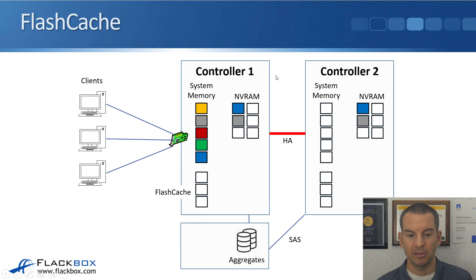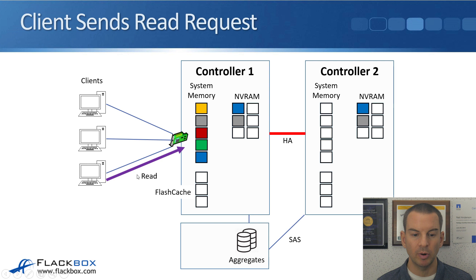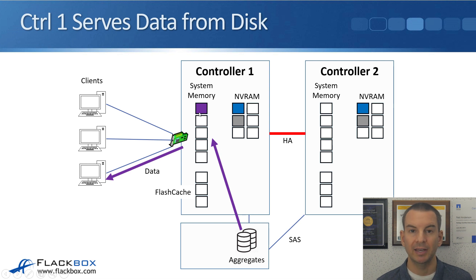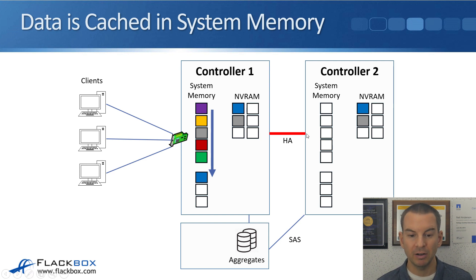FlashCache extends the size of your system memory, and FlashCache sits below the level of system memory. In the example, we've got yellow data at the top of the cache and blue data at the bottom. When a client sends in a read request for purple data, the system checks system memory — it's not there — so it fetches it from disk and puts the purple data in the top slot, bumping everything down. Without FlashCache, the blue data at the bottom would have been evicted from the cache entirely. But because we've added FlashCache, which is very fast storage, the blue data gets bumped down to FlashCache — so we've still got it in a fast cache.